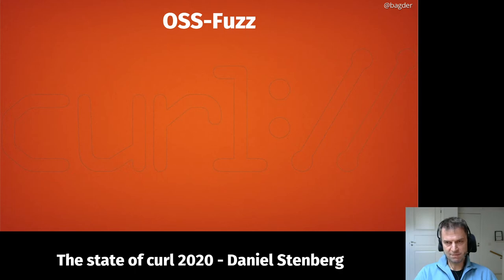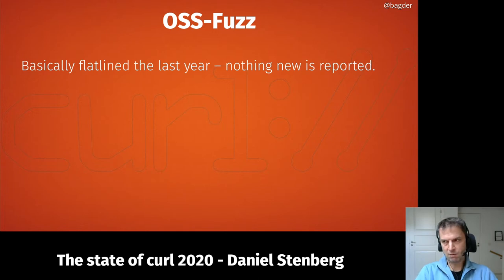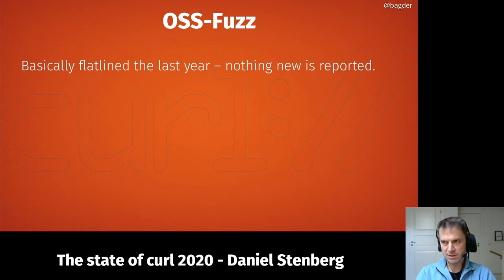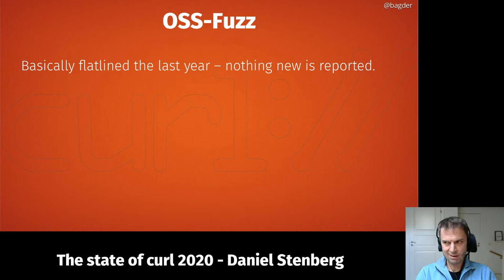We are part of the OSS-Fuzz project — a Google fuzzing project that throws a lot of garbage at libcurl non-stop around the clock. We've been doing this for a while and we've pretty much flatlined the report graph. It was a long time since OSS-Fuzz found anything particular in curl. We fixed all the low-hanging fruit and all the suspicious things, and we haven't added any new entry points for the fuzzer to find new paths.